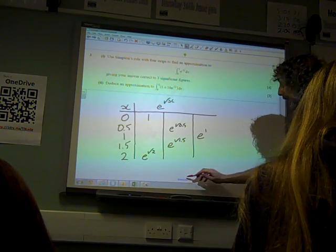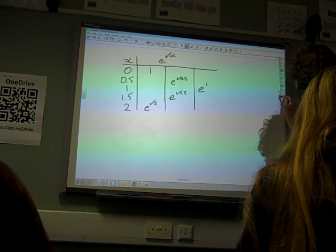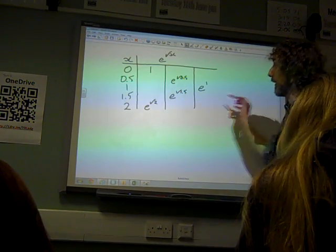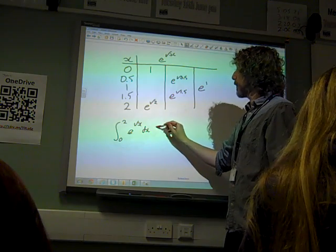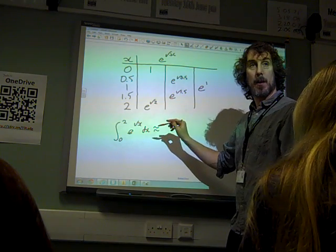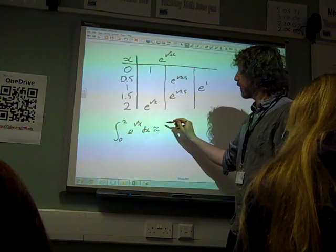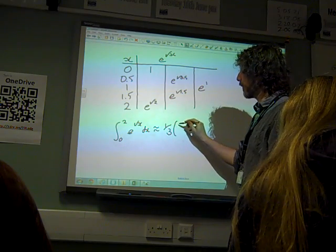So when we put it together into Simpson's rule, the answer, the area, the integral, is approximately equal to, now what do we do here? So 1 third times the step size, which is a half,